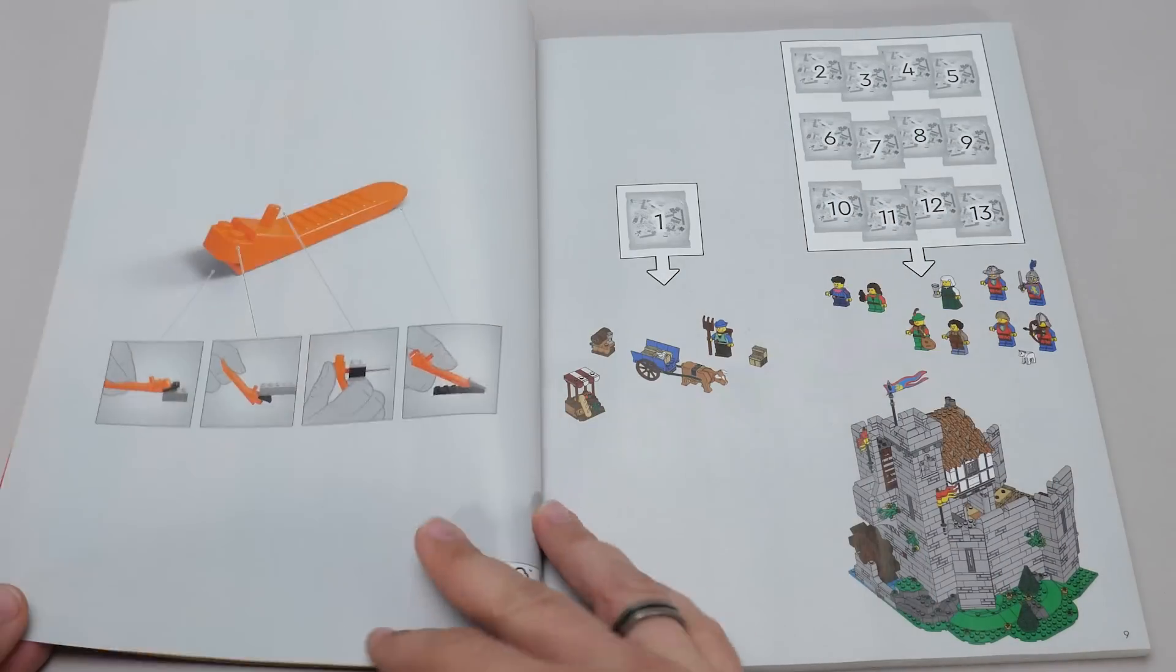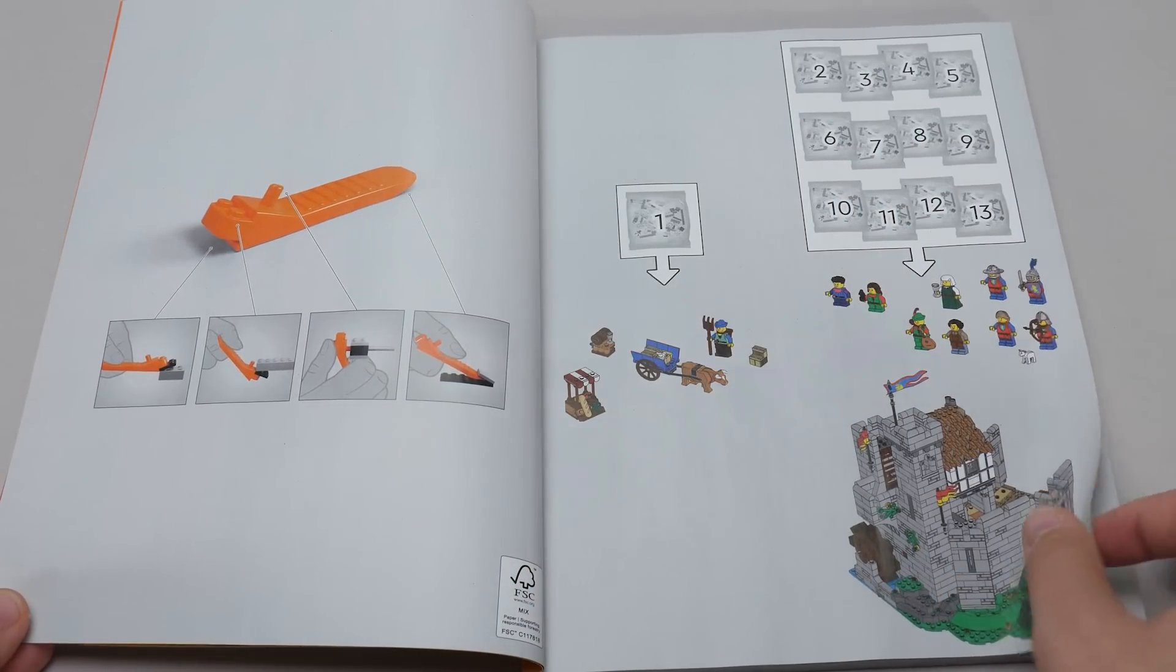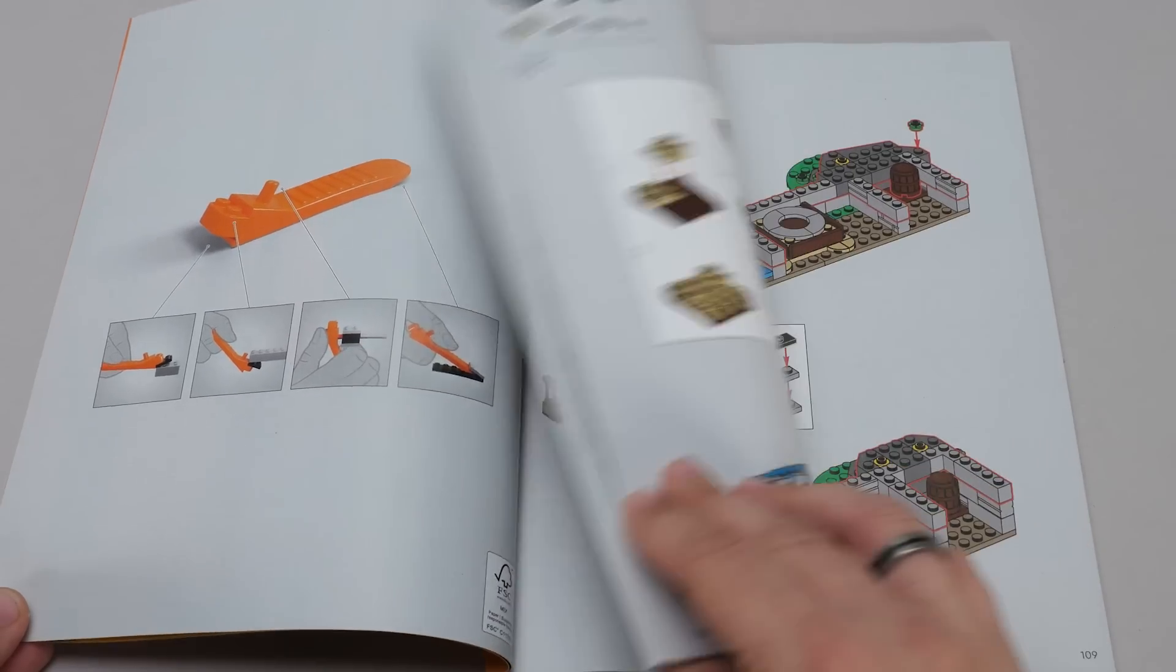I added a part list to my blog post as it is pretty long, you can find it by clicking on the link in the top right corner or in the description. Now let's start building!